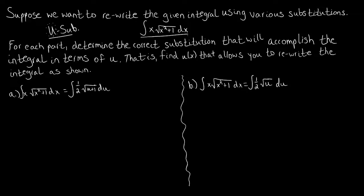What we're doing is finding u as a function of x that allows us to rewrite the integral as shown. We have this original integral that we started with, and we want to make it look like the target form. Looking at the difference, what I see is inside of our radical, we have this x squared being replaced by u, which leads me to believe that in this first question we let u equal x squared.